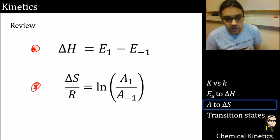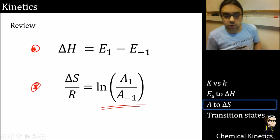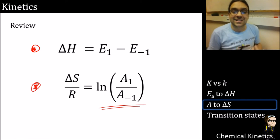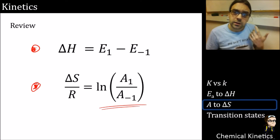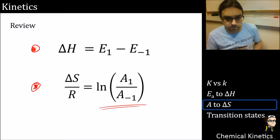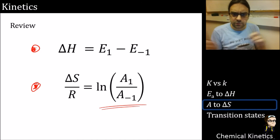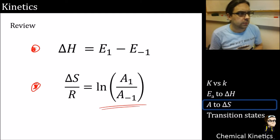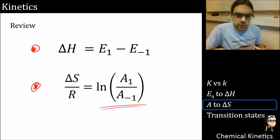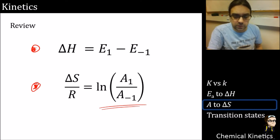To review the two key results: delta H equals the difference between activation energies - the intuitive result. And delta S over R equals the log of the ratio of pre-exponential factors - the less intuitive result, less needed for an exam but important. In reality you'd probably use the Arrhenius equation to get delta S and delta H out because measuring forward and backward equilibrium data is difficult.